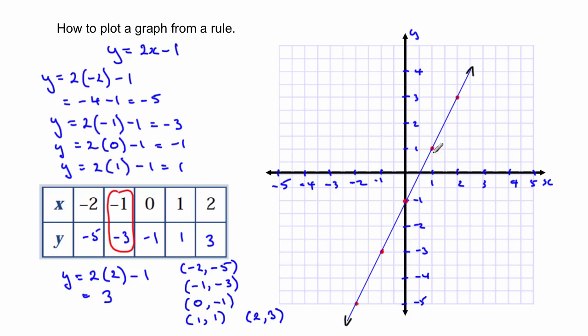And the last thing to finish it off is to make sure that you actually write the equation of the line on the line. So we're going to write that in here that this is y is equal to 2x minus 1.